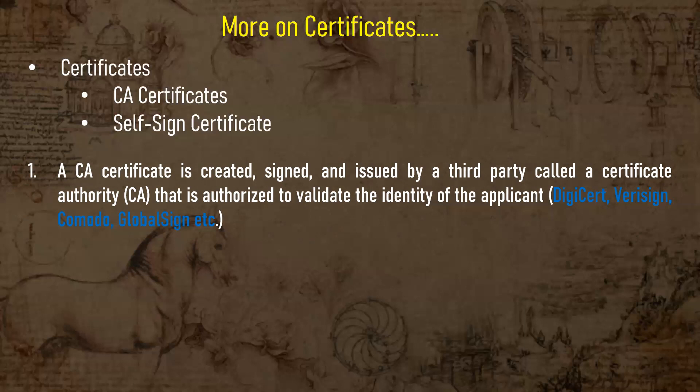There are many certificate authorities — root certificate authorities and intermediate certificate authorities. Whenever you are planning a secure website for your production environment that will be accessible over the public network, you have to buy a certificate from the certificate authority so that your end users will have trust in your website.